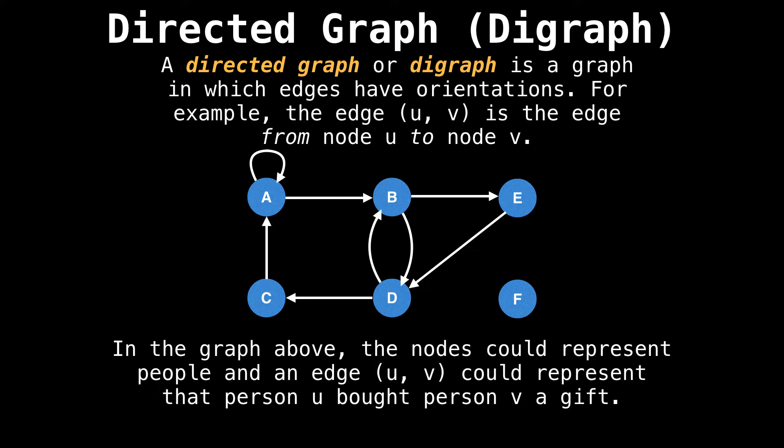This graph could represent people who bought each other gifts. So an incoming edge represents receiving a gift and an outgoing edge represents giving a gift. Therefore, person E in this graph bought person D a gift, person A bought themselves and person B a gift, and person F bought nobody any gifts and received none.